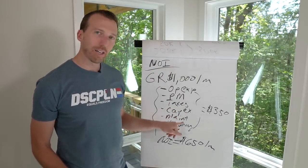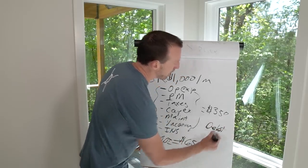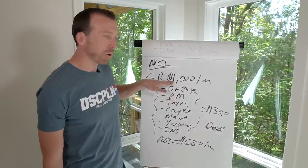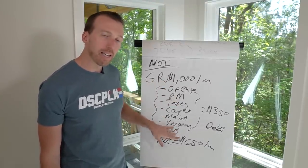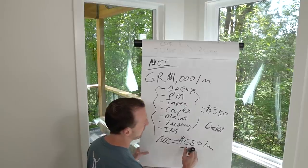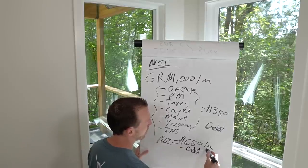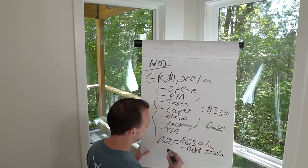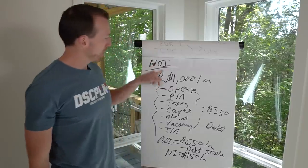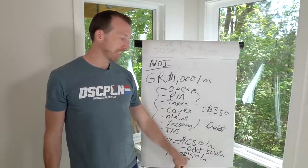That sounds good, but we're missing something called debt. Not everybody buys projects with cash — we put debt on it. Net operating income is gross rents minus all expenses except debt. To get net income, you just subtract one more thing: debt — your principal and interest (PI) on that loan. Let's say your debt payment on this property is $500 a month. That means your net income equals $150 a month. You went from NOI of $650, minus debt of $500, to net income of $150 a month.